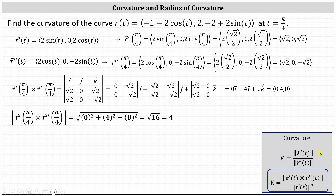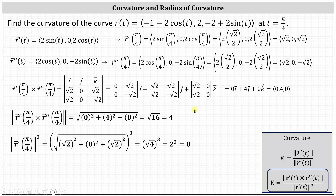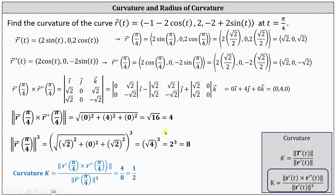For the denominator, we need the cube of the magnitude of r prime of pi over four. The vector is (√2, 0, √2), so the magnitude squared is two plus zero plus two equals four, giving magnitude two. Cubing that gives two cubed, which equals eight. The curvature is therefore four divided by eight, which simplifies to one half — the same result as before — indicating the radius of the circle of curvature is two.